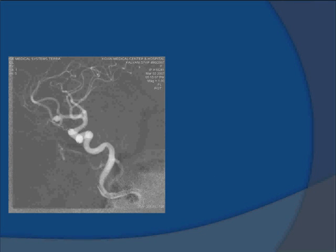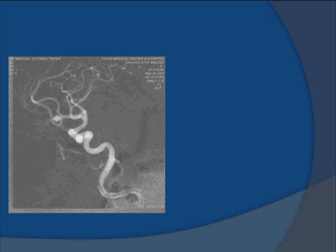What you see on screen now is what we call a road map. This is the basic guide available on the screen. As we advance a catheter, micro catheter, or wire, that image is superimposed on the road map, giving us a high degree of accuracy to know where we are going. For any neuro-interventional procedure and especially aneurysm treatment, the road map is a lifeline. Without a good road map you will have big complications and would not know where you are going.